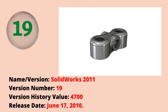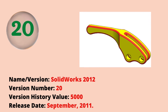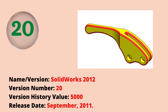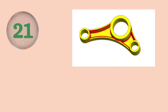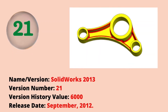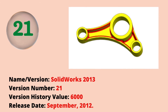The nineteenth version was SOLIDWORKS 2011 with a version history value of 4700. The release date was September 2011. The twenty-first version was SOLIDWORKS 2013 with a version history value of 6000. The release date was September 2012.